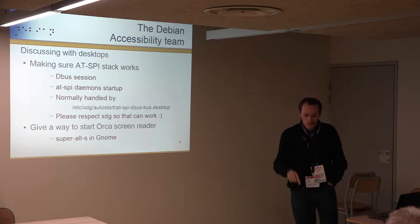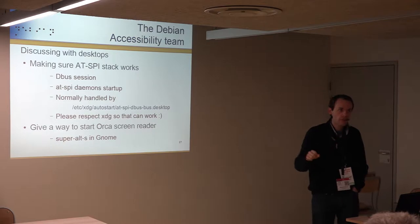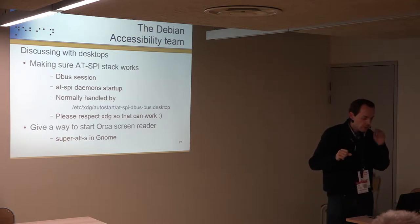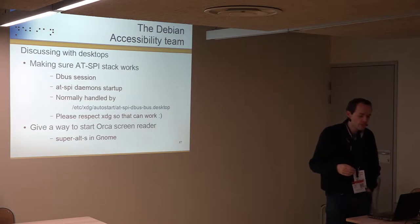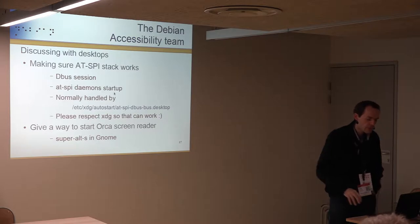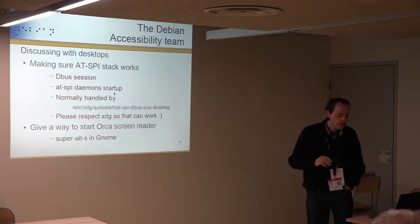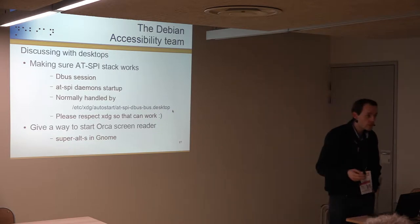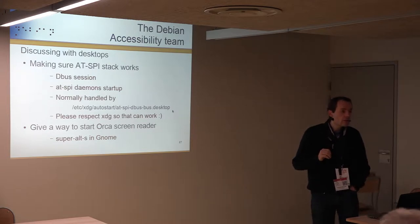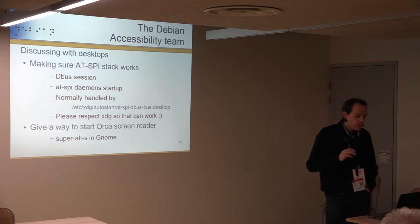For a desktop to be accessible, it needs both an accessible toolkit and a working accessibility bus — a DBus session with AT-SPI daemons that start at the beginning of the desktop session. If the desktop doesn't handle things properly, it breaks. Normally it works via an XDG autostart file, and if the desktop respects XDG it works. It didn't always work, but the ones we've tested now seem to be working.